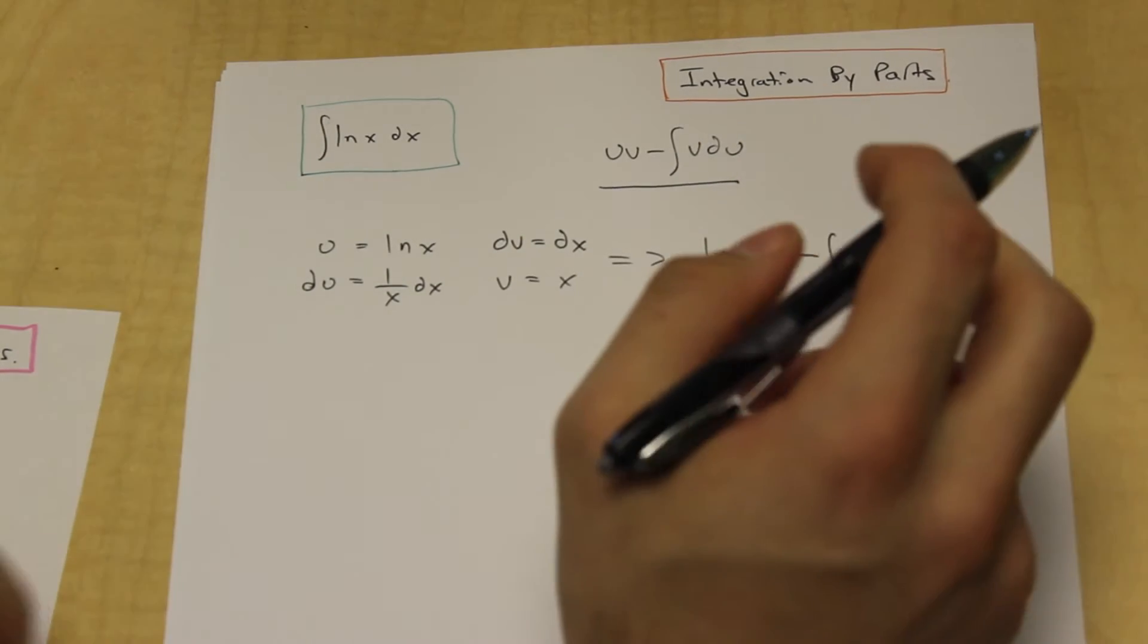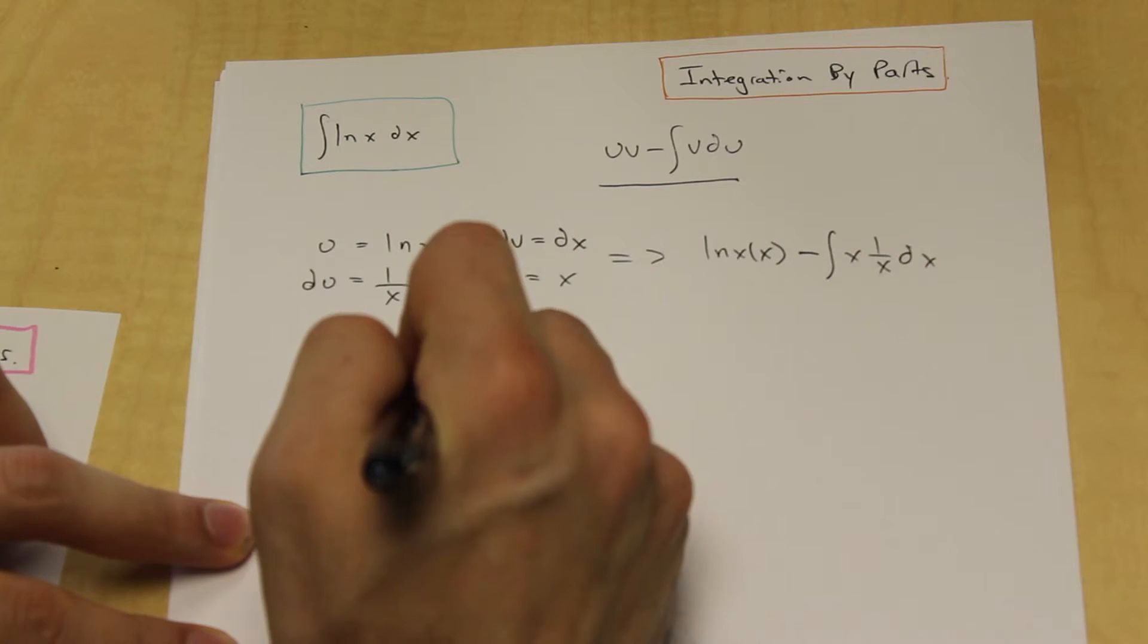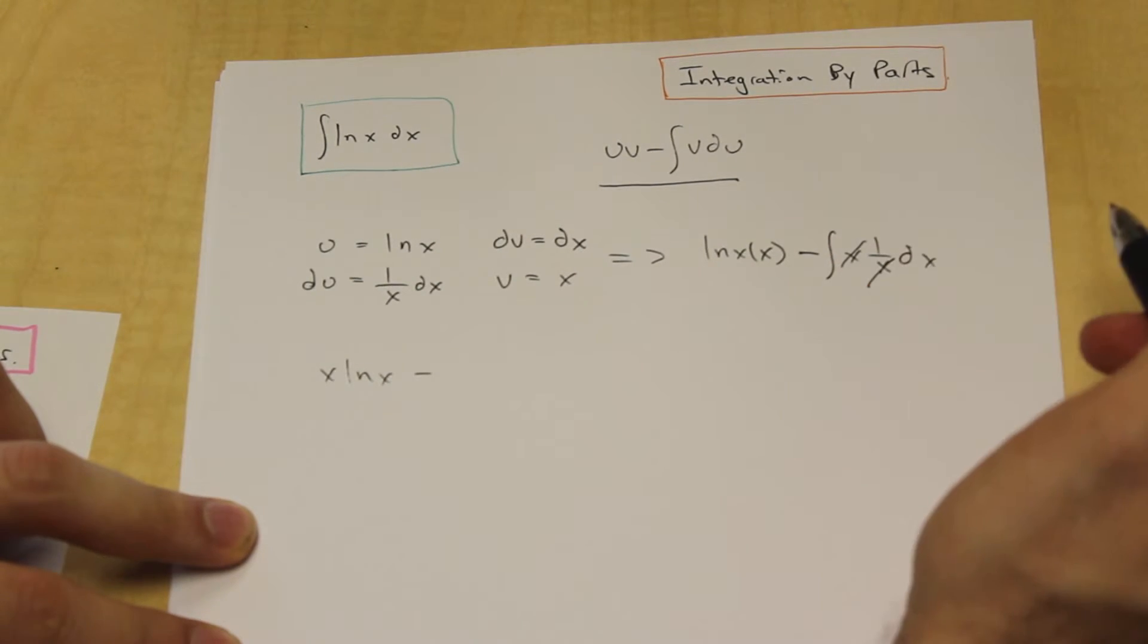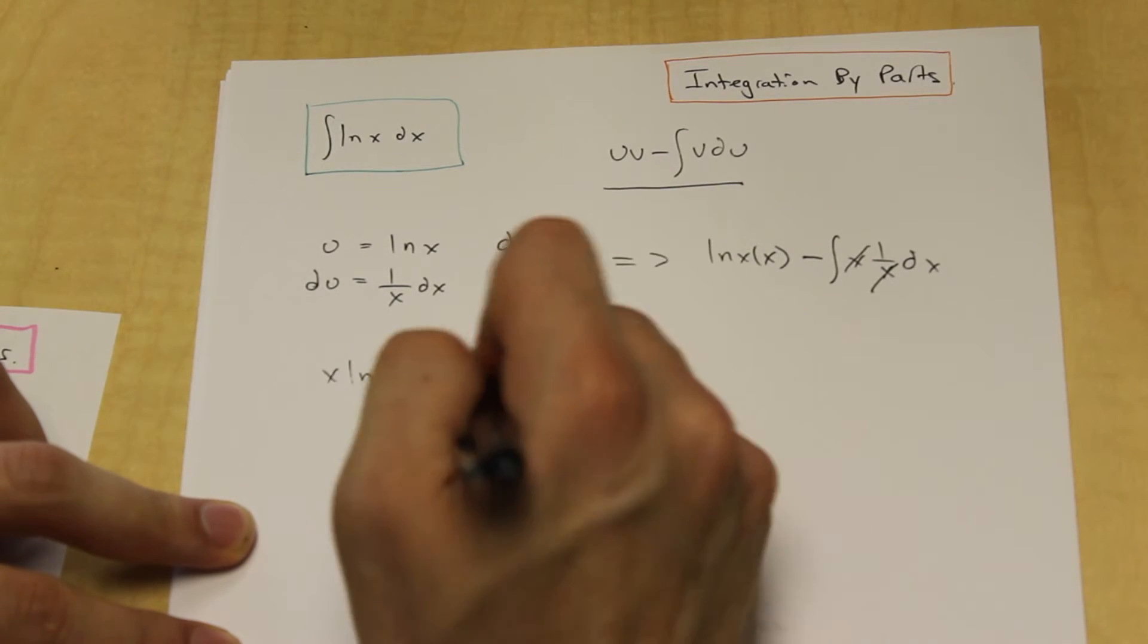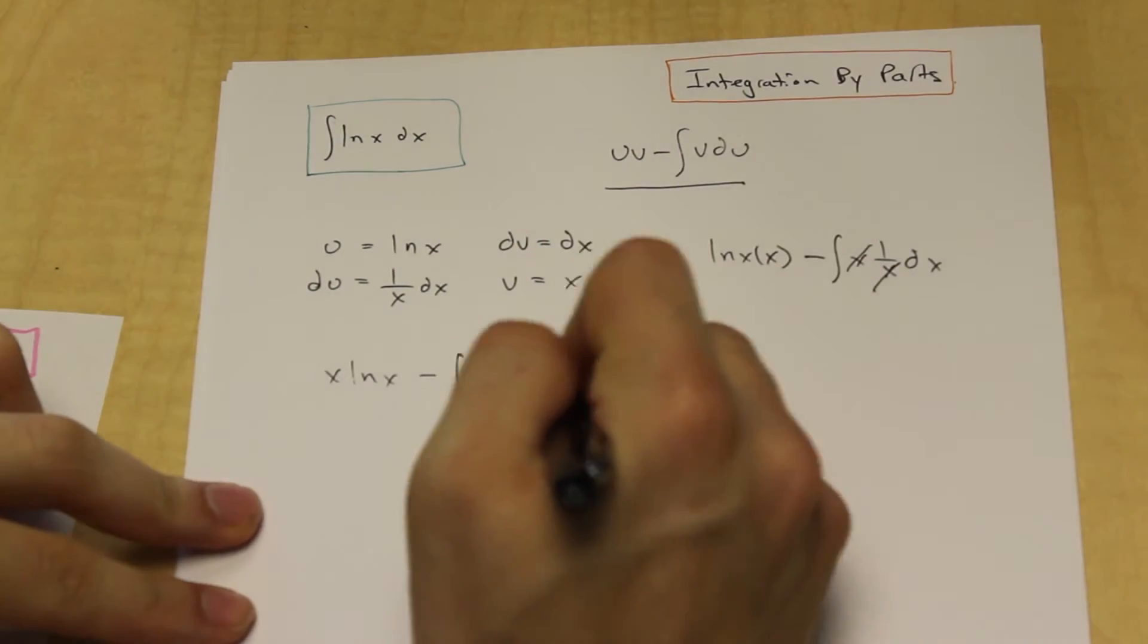Simple enough. Now, what can we do here? We can maybe move the x to the left for simplicity's sake. We'll start with that. And as we can see over here, these values are going to cancel. So we're left with integration of negative dx.